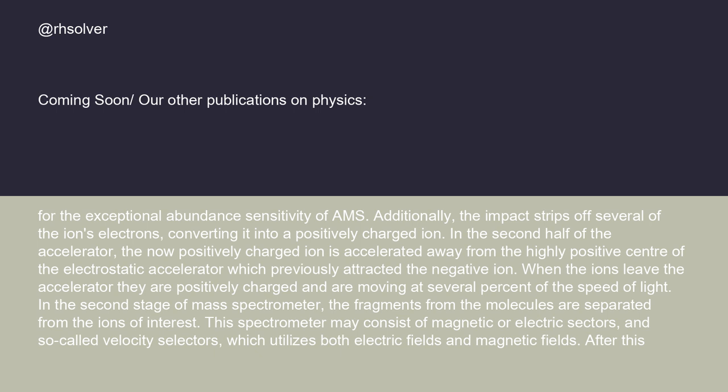In the second half of the accelerator, the now positively charged ion is accelerated away from the highly positive center of the electrostatic accelerator, which previously attracted the negative ion. When the ions leave the accelerator, they are positively charged and moving at several percent of the speed of light. In the second stage of mass spectrometer, the fragments from the molecules are separated from the ions of interest. This spectrometer may consist of magnetic or electric sectors and so-called velocity selectors, which utilize both electric fields and magnetic fields.